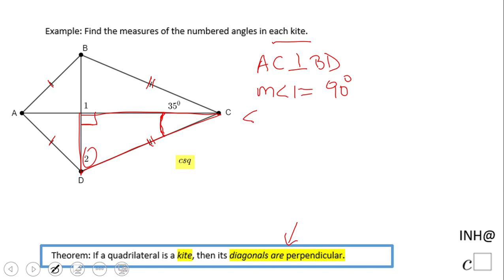Angle ACB, the one I just marked, is congruent to angle BCA. Why? That is another property of a kite. One diagonal, which in this case is AC, bisects opposite angles, which in this case are angle BAD and angle BCD. Which means the measure of angle ACB is 35 degrees.